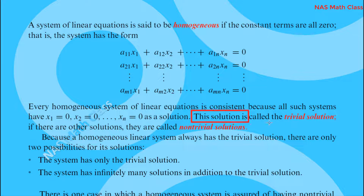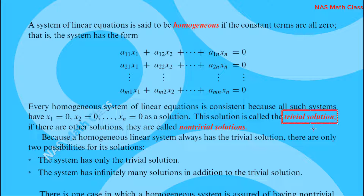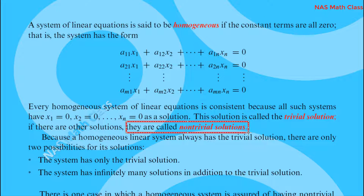This solution — where all variables equal zero — is called the trivial solution. And if there are other solutions beyond that trivial solution, they are called non-trivial solutions.